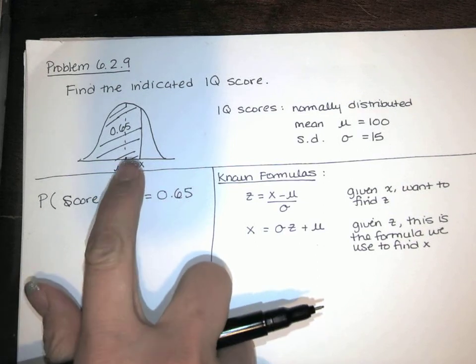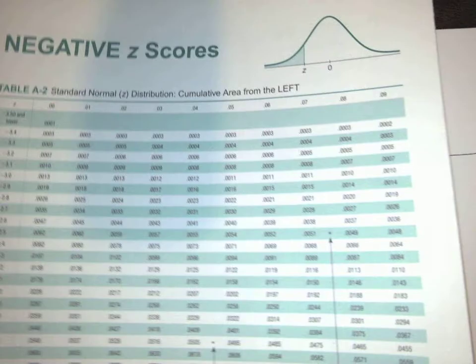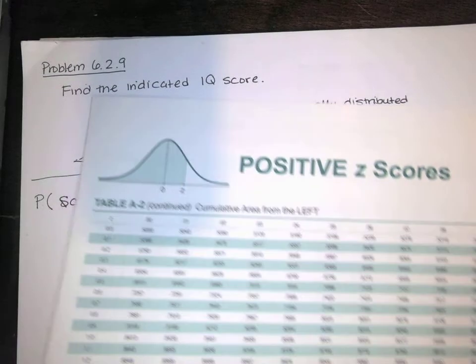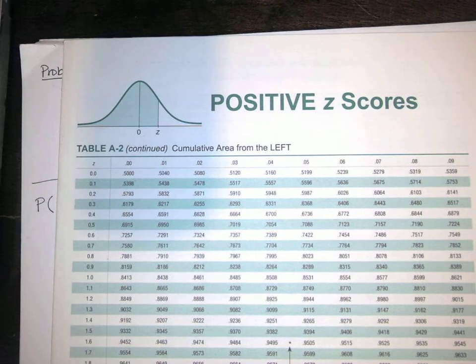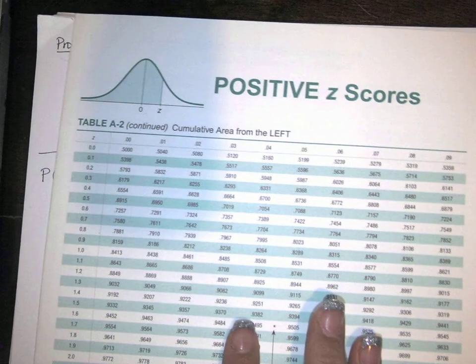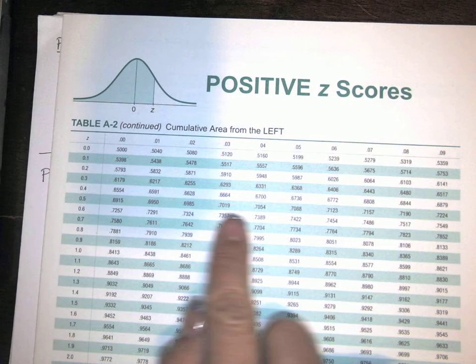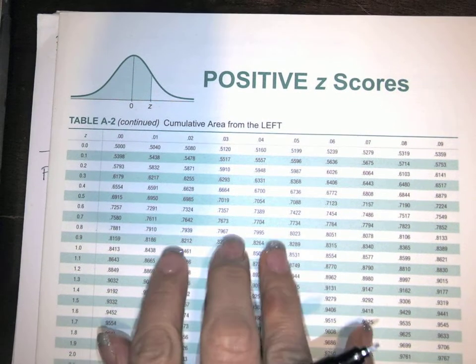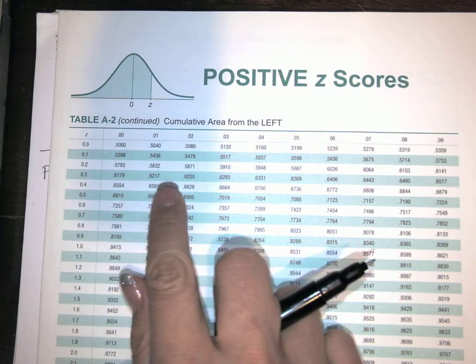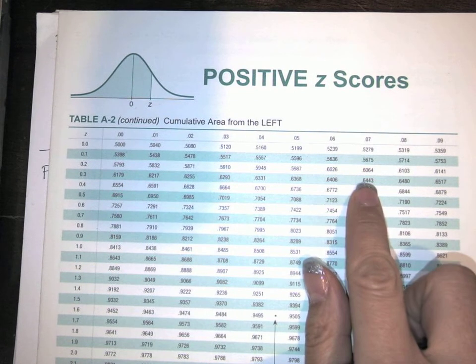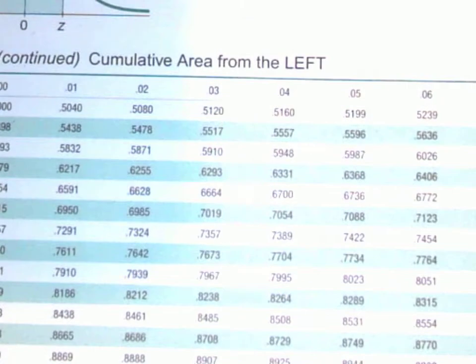So I'm going to look for an area of 65% or 0.65 in my table. Since this area to the left is 65%, I'm going to go to the positive z scores because I know I'm to the right of the mean. So I'm looking for 65% in the body of the table. Don't go over here - that's a z score. These are the probabilities, the areas. So I'm looking for the one that's closest to 65. I've got, that's pretty close. You see it?